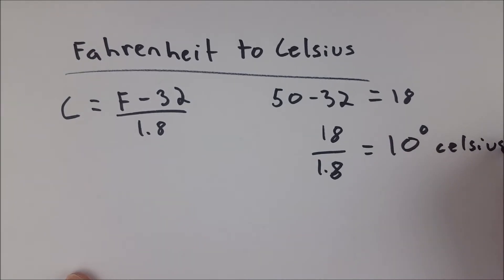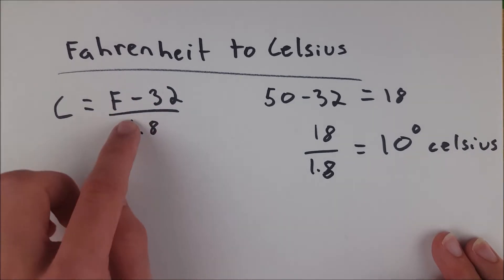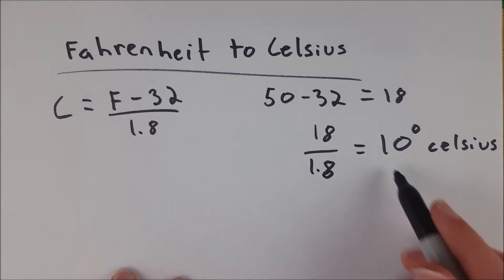And that is how the conversion works. You have your value in Fahrenheit, all you have to do to get it in Celsius is subtract 32 and divide by 1.8, and then you've got your answer.